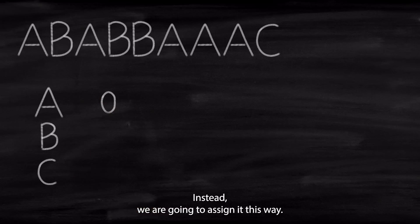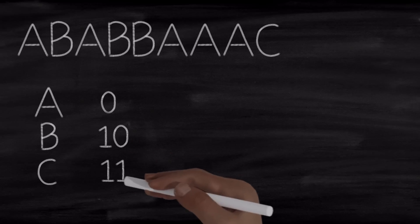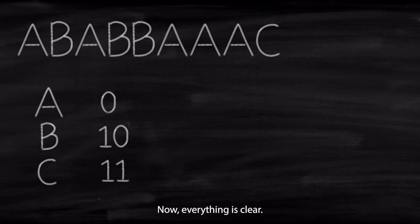How do we know if 1, 0 means C or 1, 0 means like B and A? It's confusing. It's ambiguous. So we're not going to do that. Instead, we are going to assign it this way. So B would take 1, 0. C would take 1, 1. Now we have no ambiguity. Now everything is clear.